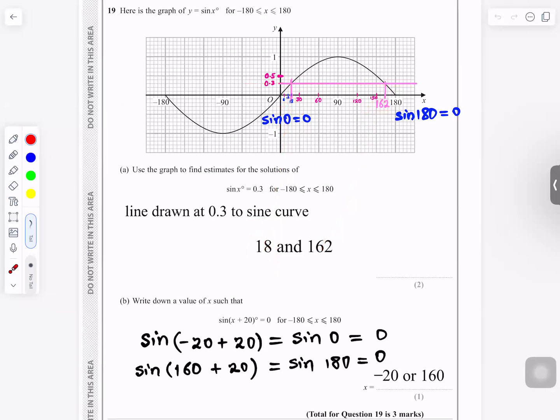And then part B: Write down the value of x such that sine x plus 20 is 0. So minus 20 plus 20 will give you 0. So that means sine of 0 is 0. 160 plus 20 gives you 180. When sine of 180 is 0, the two answers are minus 20 and 180.